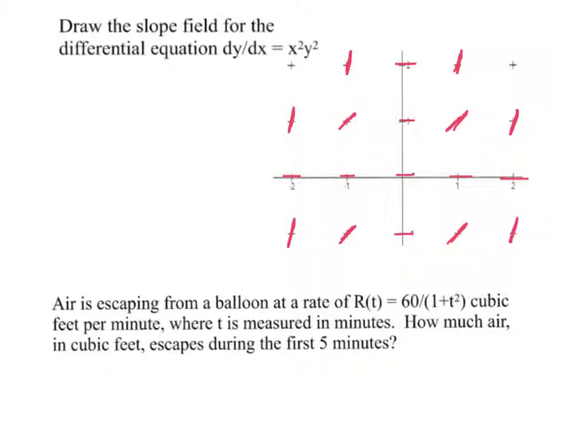And finally, these points 2, 2 and negative 2, 2, well squaring those, we'd end up with 4 times 4. This is almost going to appear vertical because it's a slope of 16, something like that. So you don't necessarily need to make a table of values. This works pretty well.